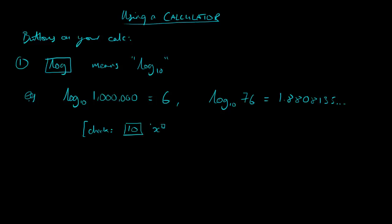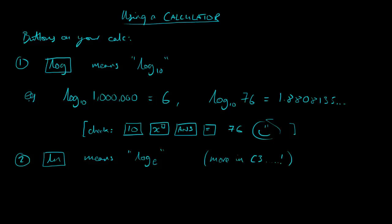Now if you have a calculator with an ANTS key, after you've done that calculation, you can do this. Raise 10 to the power of ANTS equals and you should get 76. Because 1.88 etc. is the power that you'd have to raise 10 to to get 76. The second button that you'll see has the letters LN on it, sometimes pronounced LN. And that means log to the base E. Now E is a number that you don't need to worry about just now. It's a special number, a bit like PI, and you're going to find out all about that in C3, in the A2 part of A level.